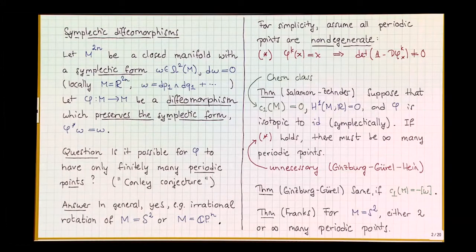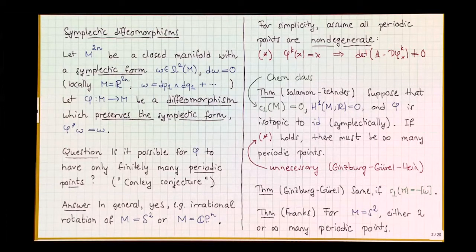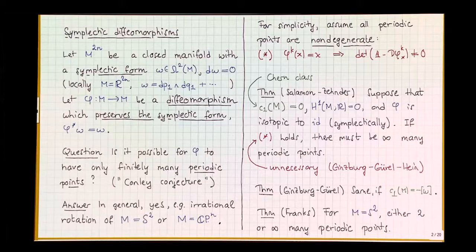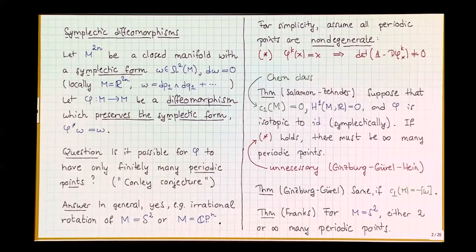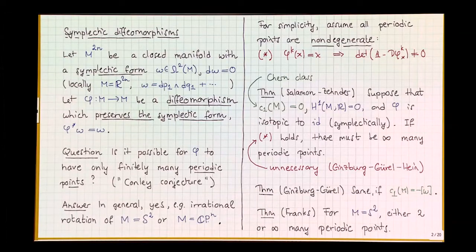The question that goes under the name of the Conley conjecture is: is it possible for such a symplectic map — Poincaré initiated the study of its dynamics — to have only finitely many periodic points overall, taking all the periods together? The simplest aspects of dynamics are the fixed points and the periodic points. If you restrict to the fixed points, the map does nothing, and if you restrict to periodic points of order k, the map becomes a discrete map of order k.